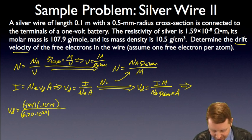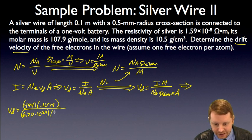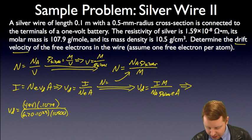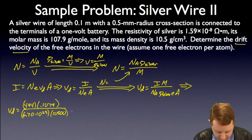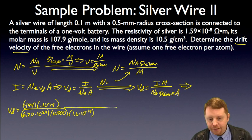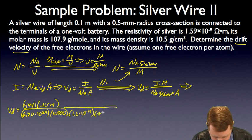We also have the density of silver, 10.5 grams per cubic centimeter, or 10,500 kilograms per cubic meter, times the charge on each charge carrier, an elementary charge, or 1.6 times 10 to the minus 19 coulombs. Finally, times the cross-sectional area, pi times 0.0005 meters squared.